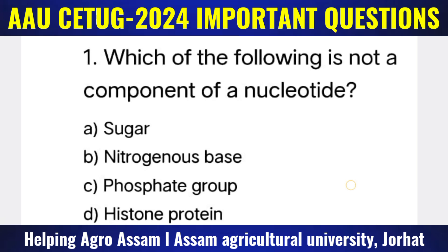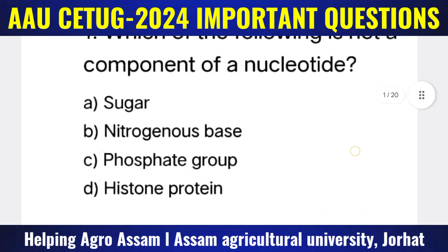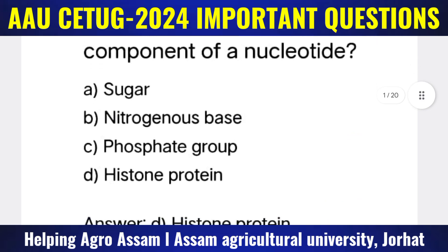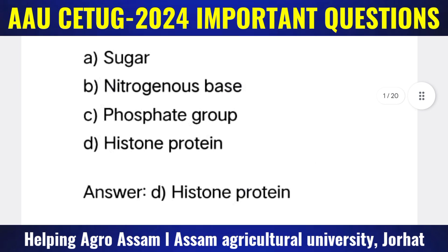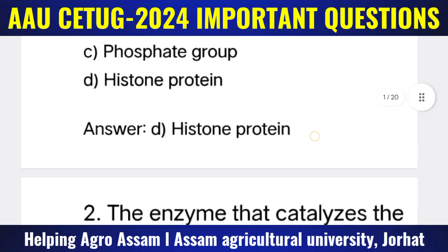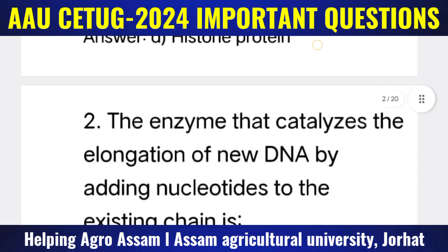Question 1: Which of the following is not a component of a nucleotide? Options: (A) Sugar, (B) Nitrogenous base, (C) Phosphate group, (D) Histone protein. The correct answer is option D — histone protein.